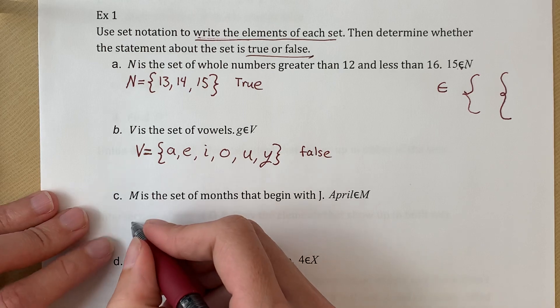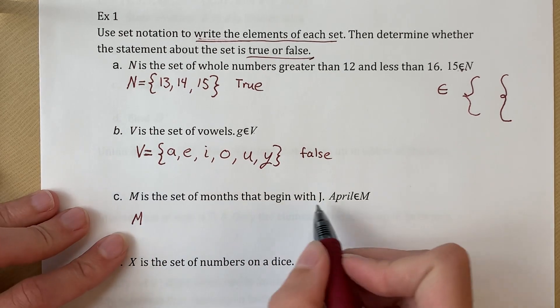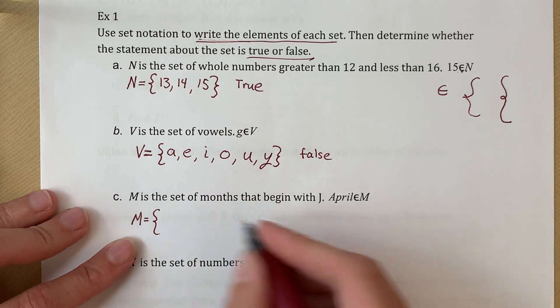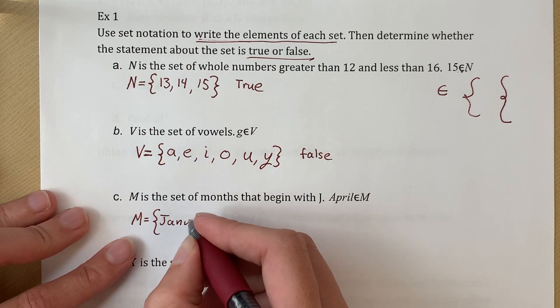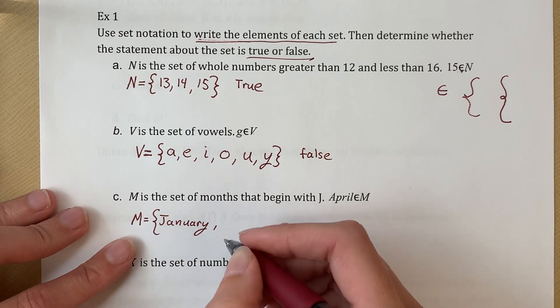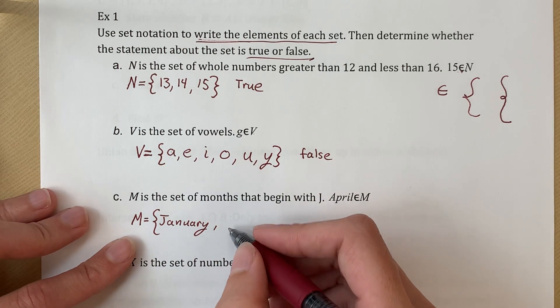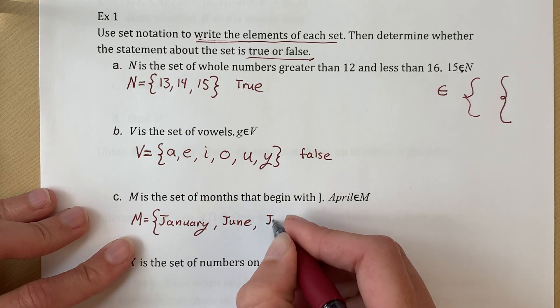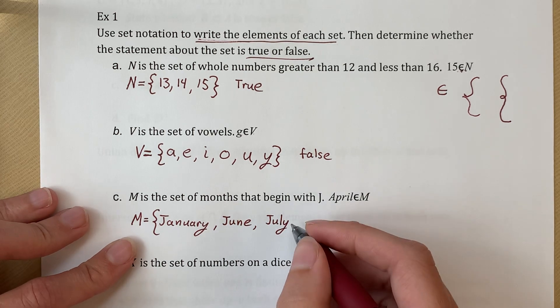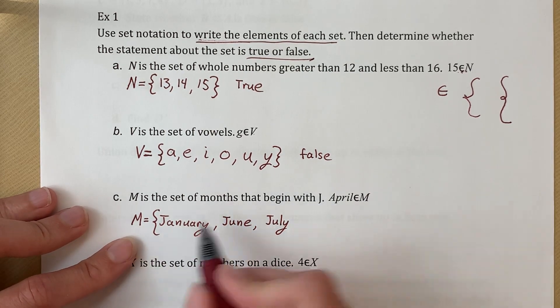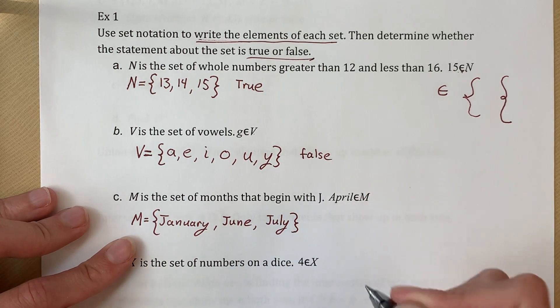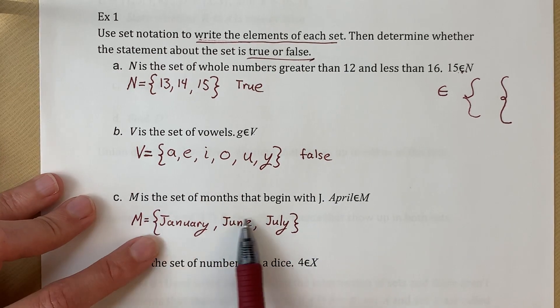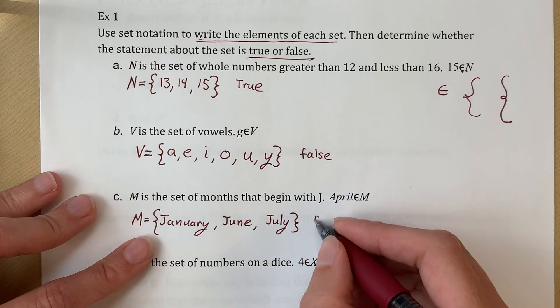For problem C, M is the set of months that begin with J. So M equals the set of months that start with J. So we're going to have January, June, and July. So April is an element of M. Is April an element here? Is it one of the members of our group? No. So it is false.